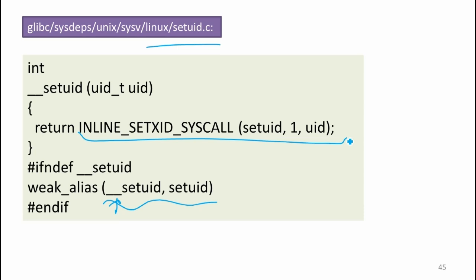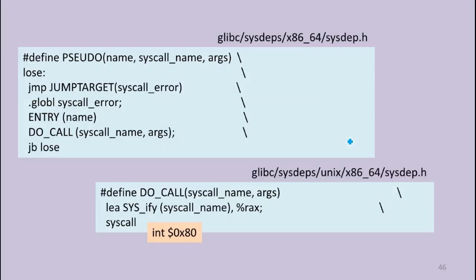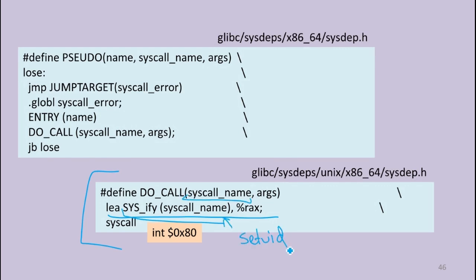What that syscall wrapper is doing — there are a lot of different macros — but eventually what it's doing is loading into a register the number that identifies this particular system call. All system calls have numbers, and there are only a bit over a hundred of them. It loads into this register the number that corresponds to the setuid system call, and then it makes the system call. The way it makes the system call — hidden in macros — is doing an interrupt: interrupt hex number 0x80. That's the convention for how to make a system call in Linux.